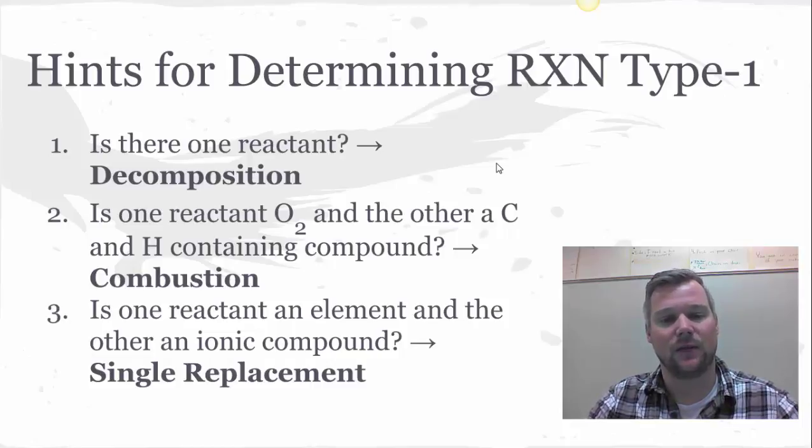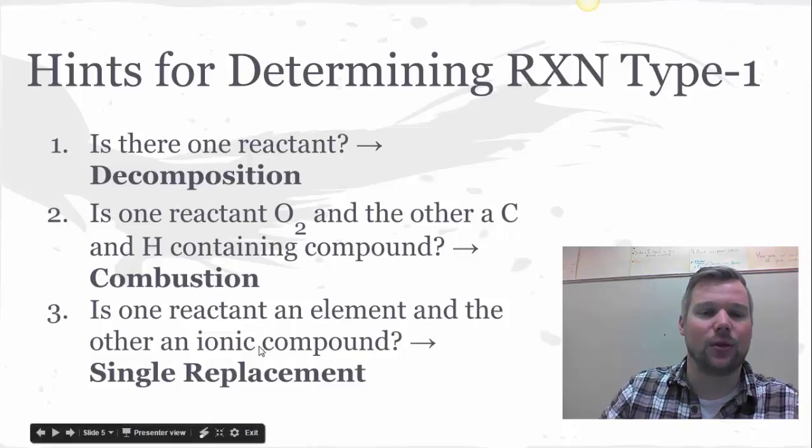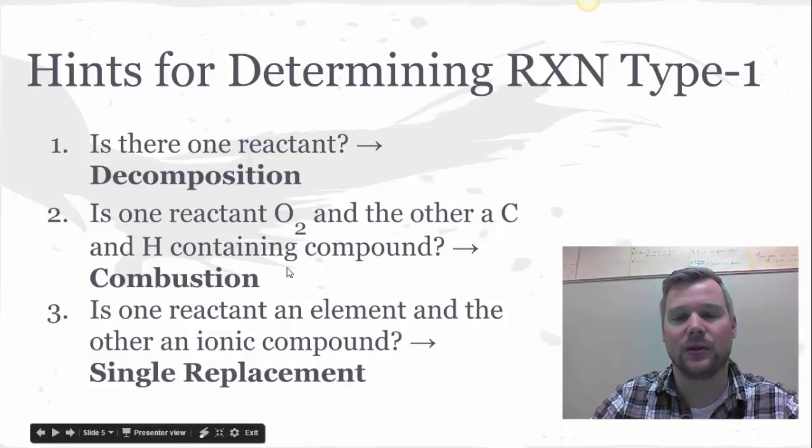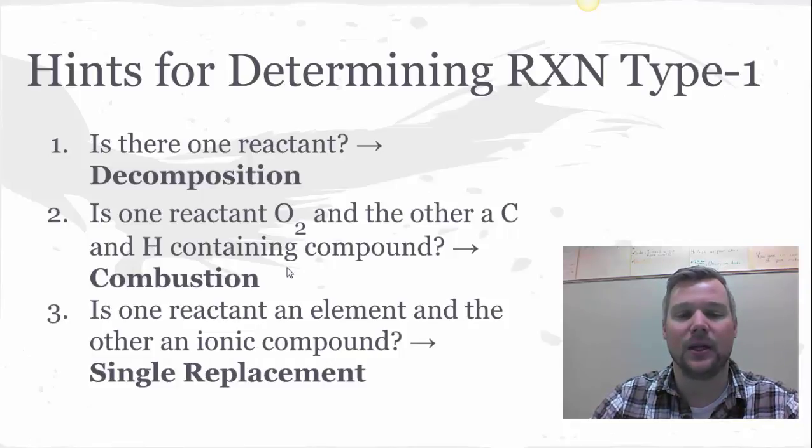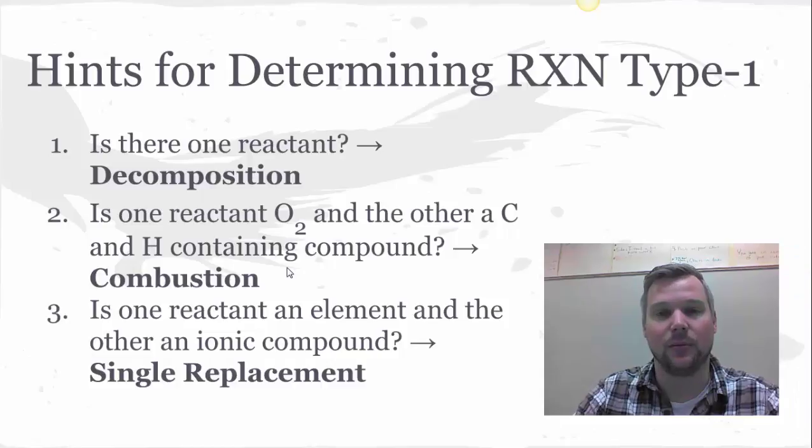If you don't see that, you ask yourself the third question: is there only one reactant an element and then the other reactant happens to be ionic? If that's the case, it's going to be single replacement. It's worth noting for question two and three, it doesn't have to be O2 plus CH, it could be CH plus O2, and for number three it could be an ionic compound plus an element.